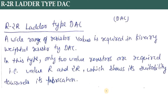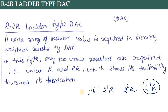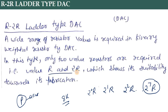In the weighted resistor type, the resistor values go as 2 raised to the power 0 into R, 2 raised to the power 1 into R, 2 raised to the power 2 into R, and so on. For an 8-bit DAC, the largest resistor would be 2 raised to the power 7 into R — for example 8K ohm — making the design very complicated with very bad accuracy. That is why we have replaced it with the R2R Ladder type DAC.